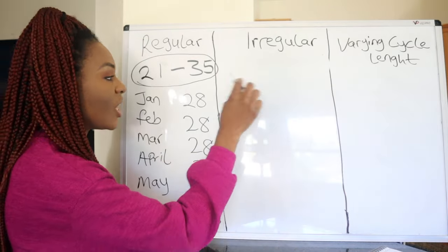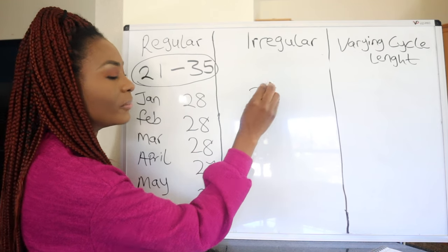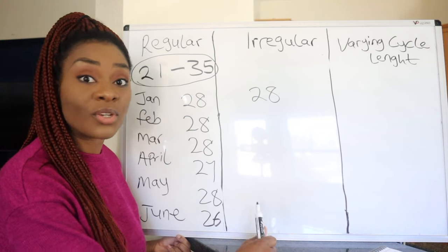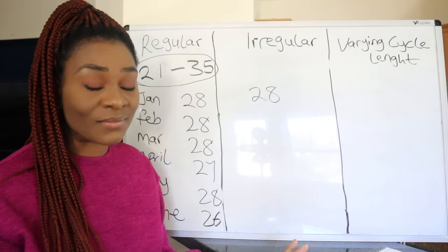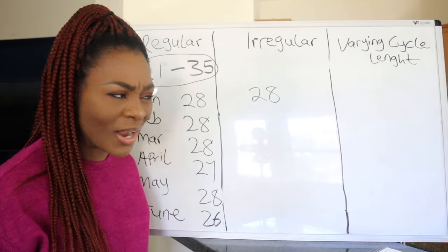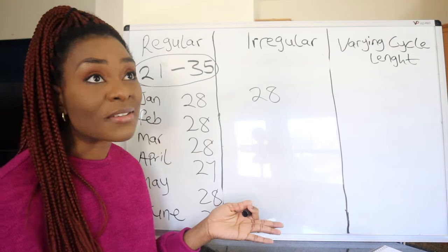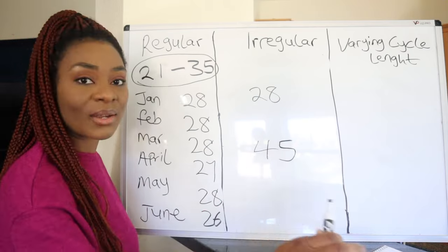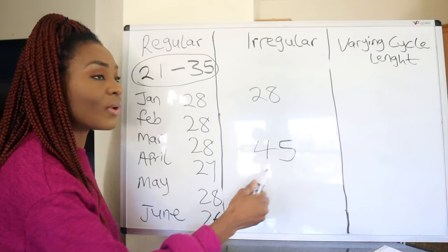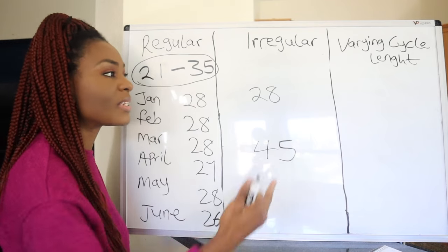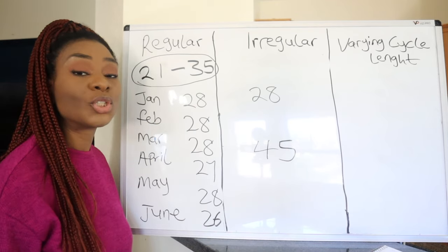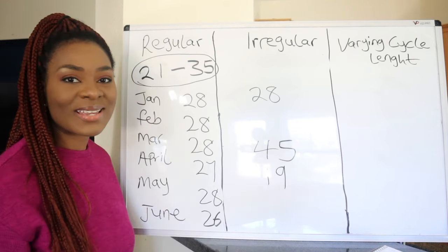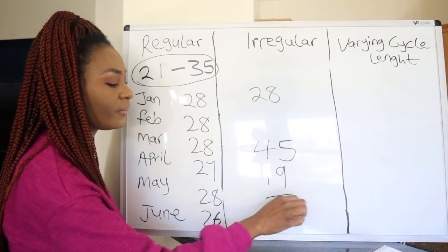For example: in January you had a 28-day cycle, in February your period just disappeared — not pregnant, negative test — then in March your period came back after about 40 to 45 days. Then in April you're wondering when it will come again, and it shows up way too early — a 19-day cycle.